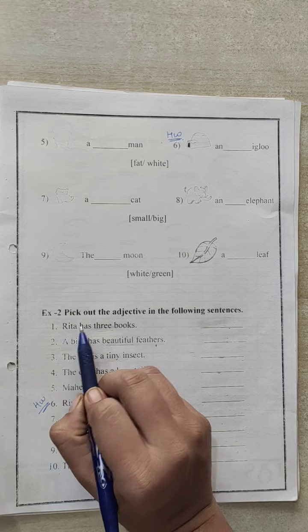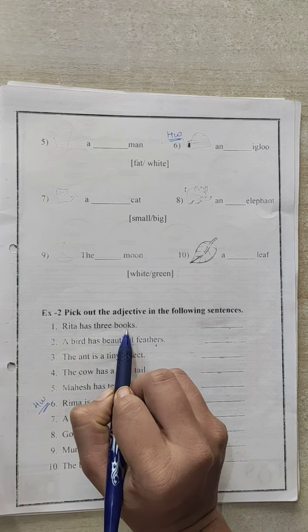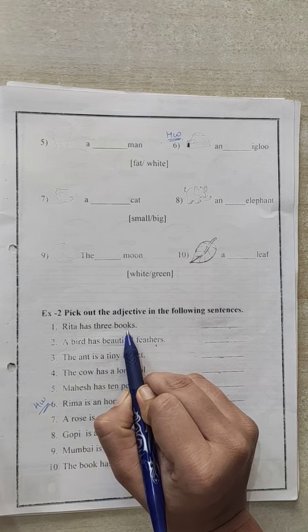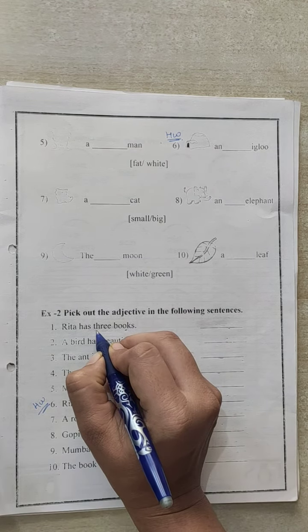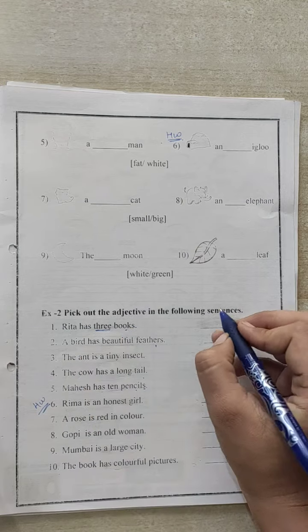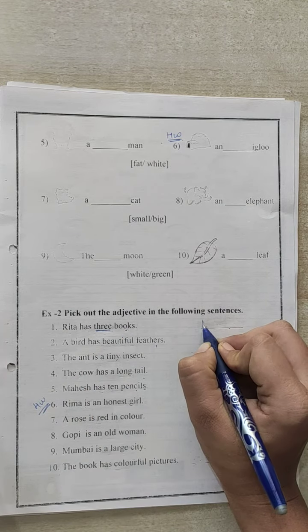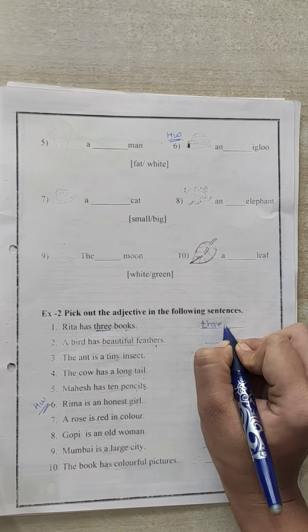Number 1. Rita has 3 books. How many books does Rita have? Rita has 3 books. So here 3 describes the number of books. So it is a describing word. So we will write here 3 as an adjective.